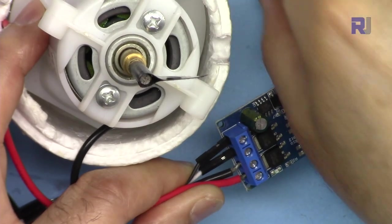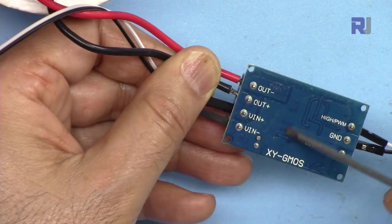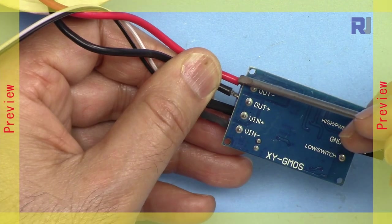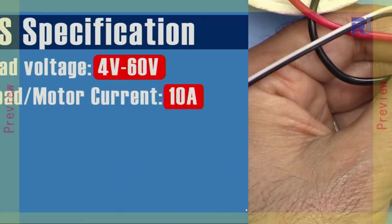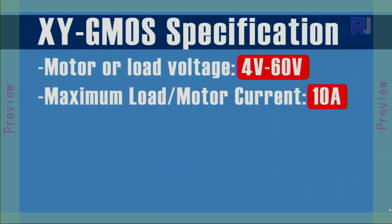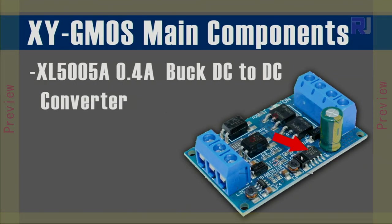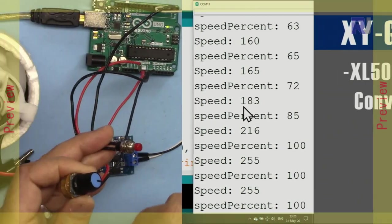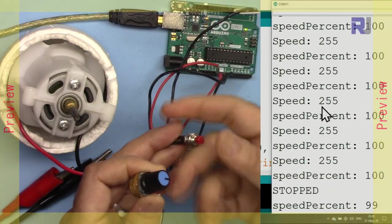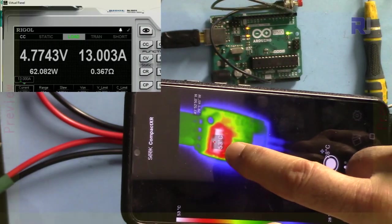The MOSFET gets hot, so these two terminals are out where this module can handle 10 ampere for load or motor. This is 0.4 ampere buck DC-to-DC at 53 degrees Celsius.